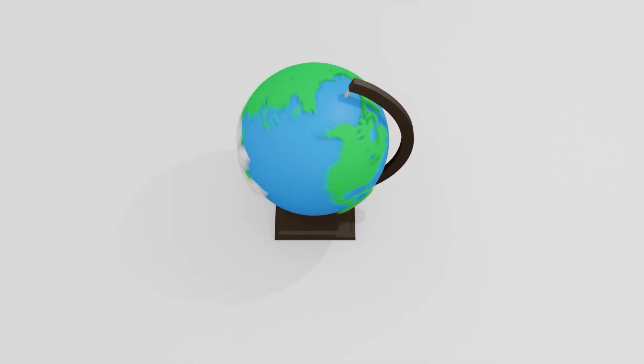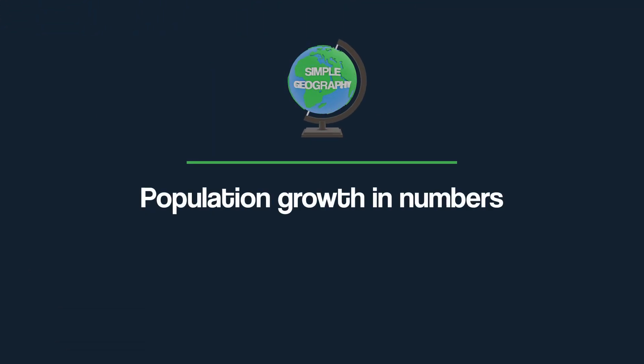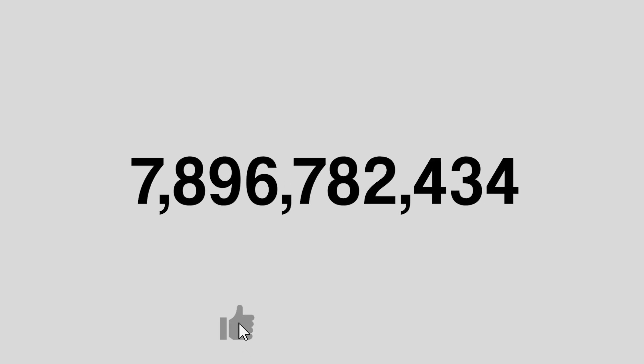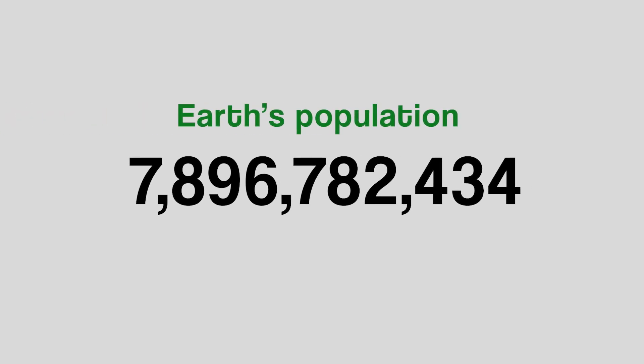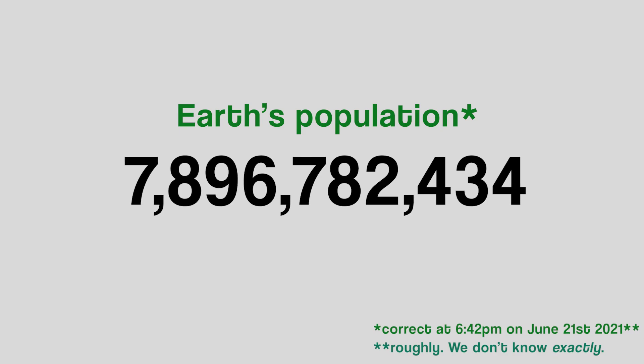Before we go deeper into all the urban stuff, it helps if you know a little bit about Earth's human population. If you're watching this, the number you see on the screen is out of date. This is the number of humans on Earth, known as the population — or at least it was the population at 6:42pm on the 21st of June 2021. And even that is a rough estimate; we'll never really know for sure.